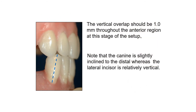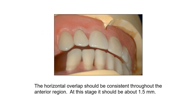The vertical overlap should be 1 mm throughout the anterior region at this stage of the setup. Note that the canine is slightly inclined to the distal, whereas the lateral incisor is relatively vertical. The horizontal overlap should be constant throughout the anterior region — 1 to 1.5 mm at this stage.